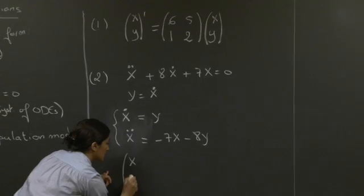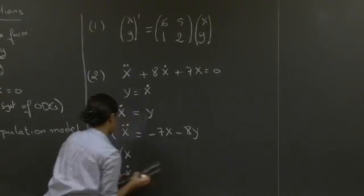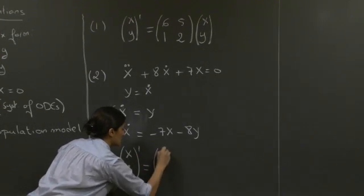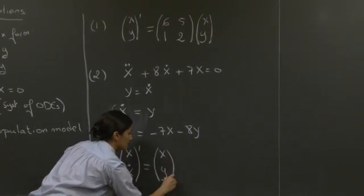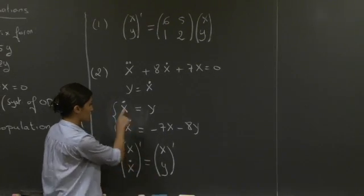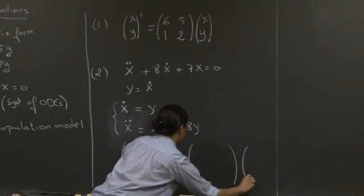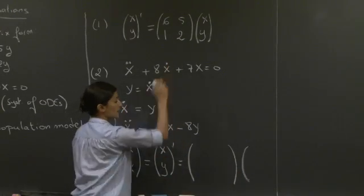Here, as x, x dot, which is just y, I'm just going to write this like this, from what we defined, equals again x, y, like we did previously.